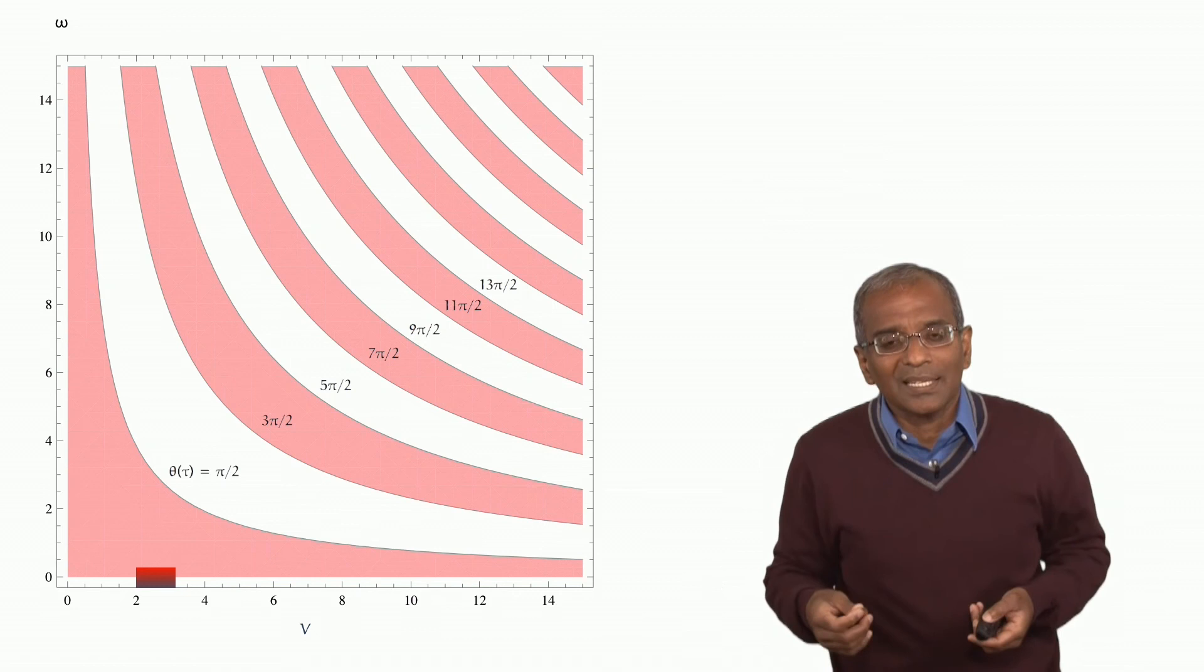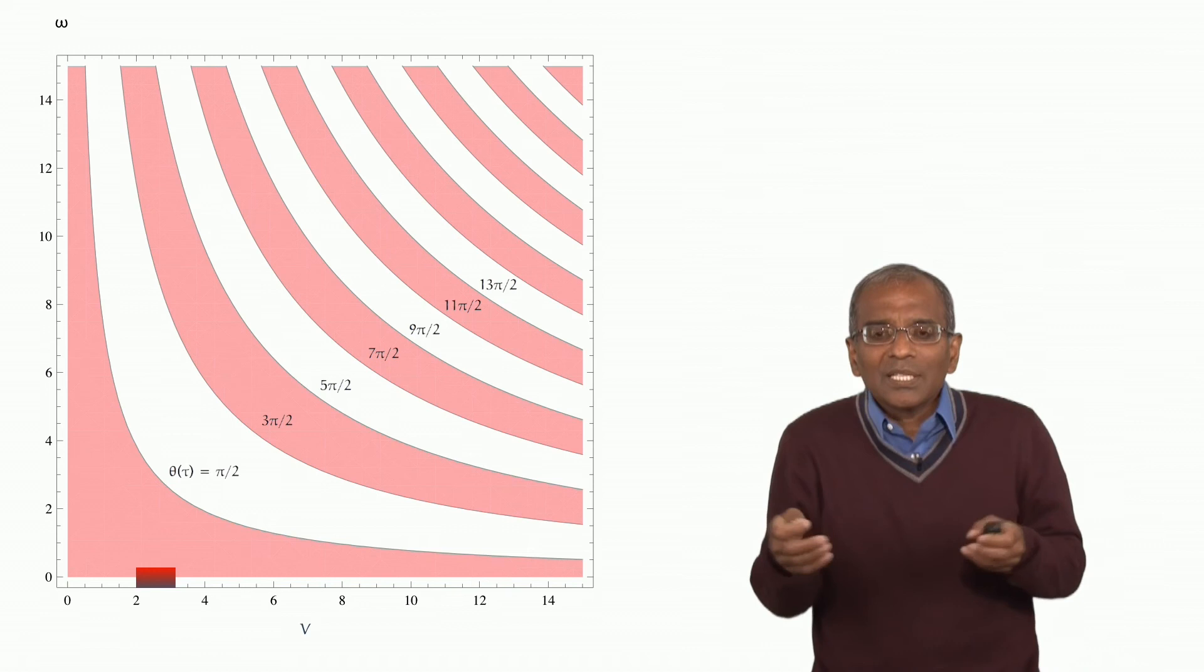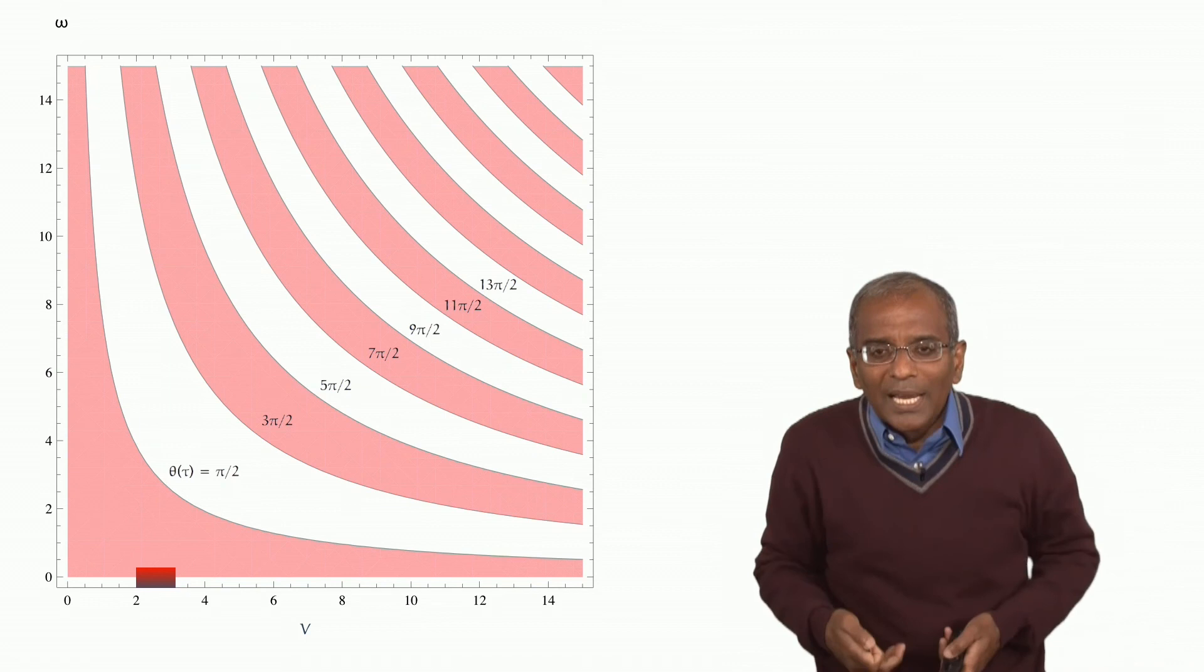And you realize that our picture is woefully inadequate, because on the one hand, we have speeds much larger than are actually realized.